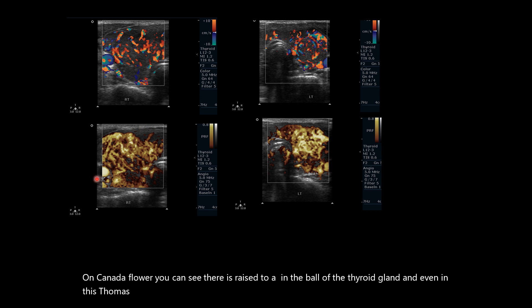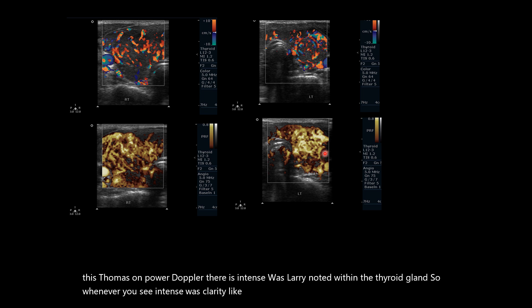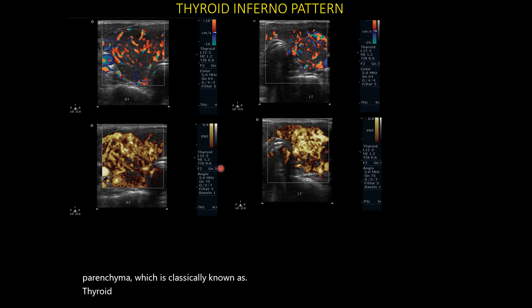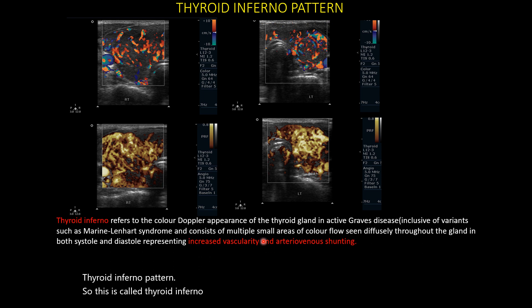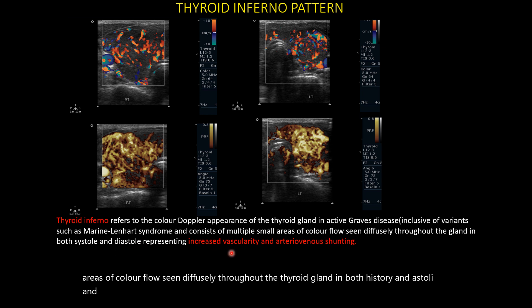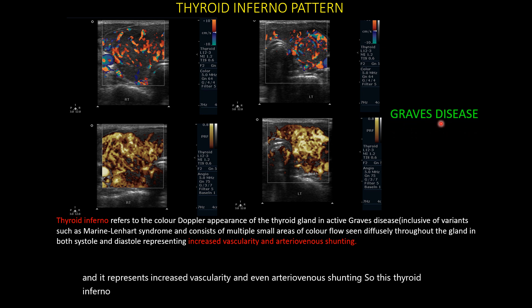On power Doppler, there is intense vascularity noted within the thyroid gland. Whenever you see intense vascularity like this with no intervening normal thyroid parenchyma, it is classically known as the thyroid inferno pattern. This pattern consists of multiple small areas of color flow seen diffusely throughout the thyroid gland in both systole and diastole, representing increased vascularity and arteriovenous shunting. The thyroid inferno pattern is classically seen in Graves disease.